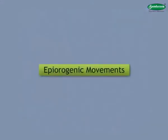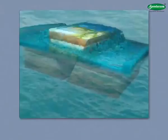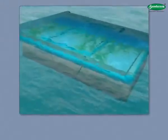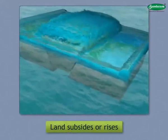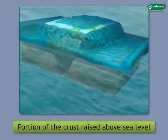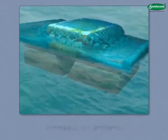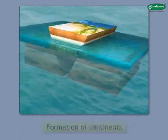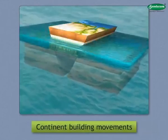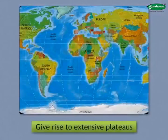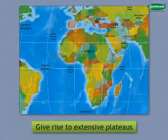Epi-Orogenic Movements. The movements that give rise to continents are called epi-orogenic movements. In such movements, the land subsides or rises. When a portion of the crust rises above sea level, it leads to the formation of continents. Hence, such movements are also called continent-building movements. Sometimes, such movements also give rise to the formation of extensive plateaus.